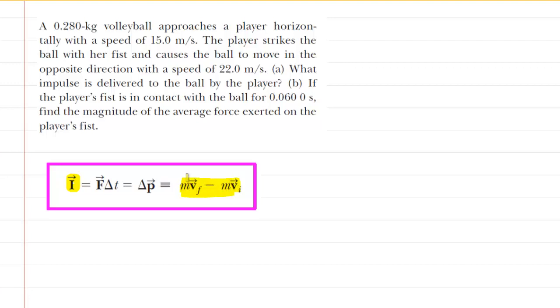We're going to need a few things: the mass, the final velocity, and the initial velocity. The mass is directly given in the problem, and the speeds are given as well.